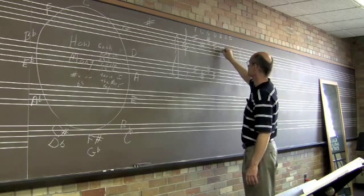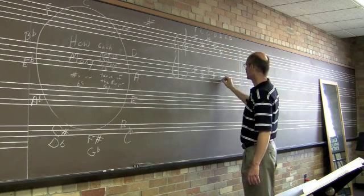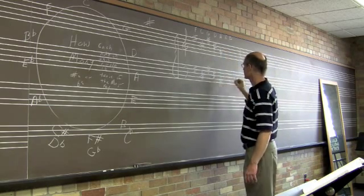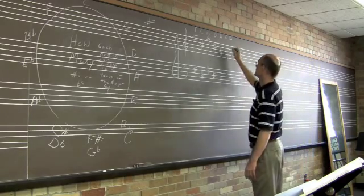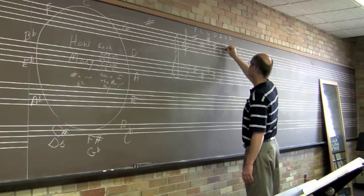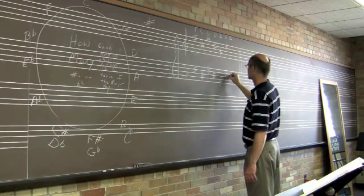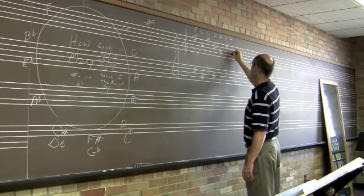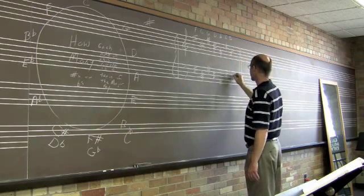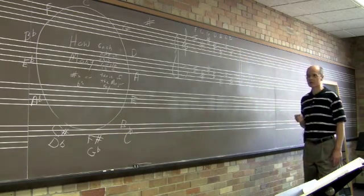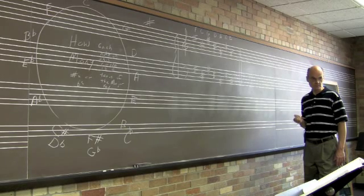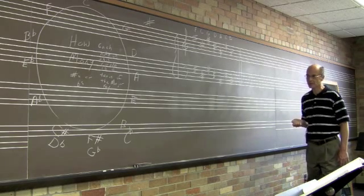Then I go down to the second space for A and to the first space in bass clef for A. The fourth space for E, third space in bass clef. Middle line B, second line B in bass clef. So that's the order of sharps.